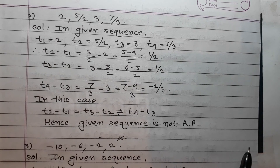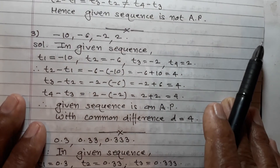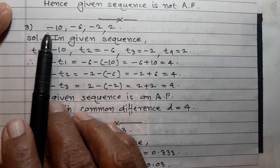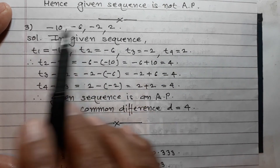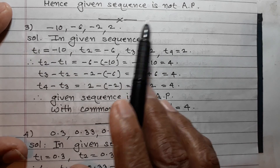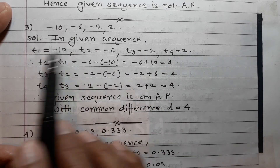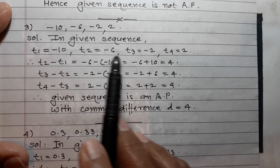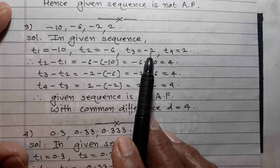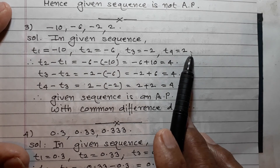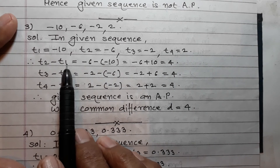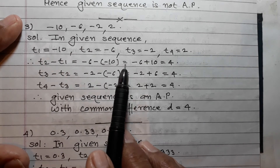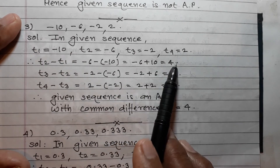Question 3: -10, -6, -2, 2. In the given sequence: t1 = -10, t2 = -6, t3 = -2, t4 = 2. t2 - t1 = -6 - (-10) = -6 + 10 = 4.